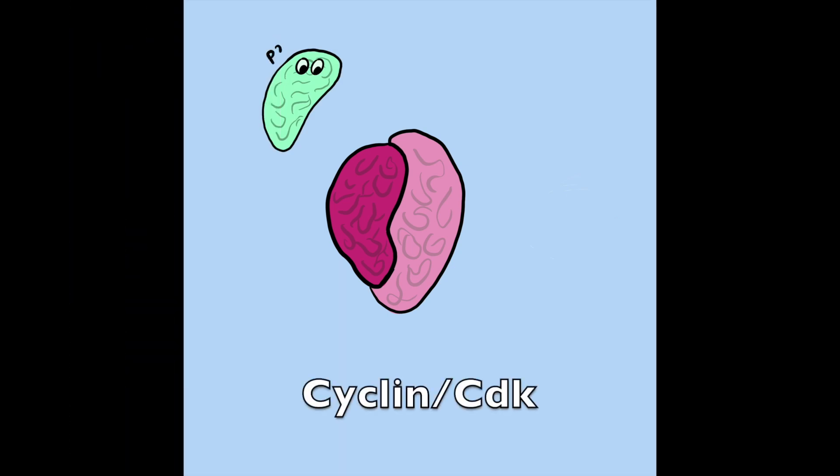p21 is a tiny protein that binds to a two-protein complex called cyclin-cdk. Cyclin-cdks are major regulators of cell cycle progression. They tell the cells to start dividing.